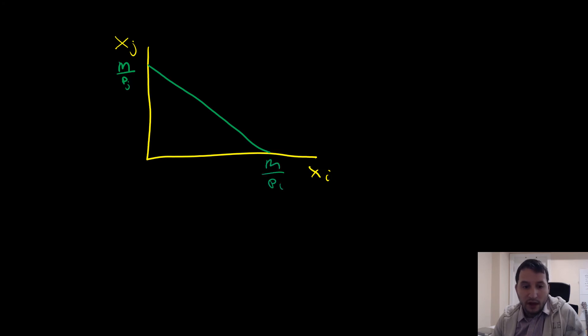So what exactly is going on here? Let's consider the regular two-good case. Here we have x_i and x_j, and we have our budget constraint here as follows, with our endpoint of m over p_j being our vertical intercept and m over p_i being our horizontal intercept.